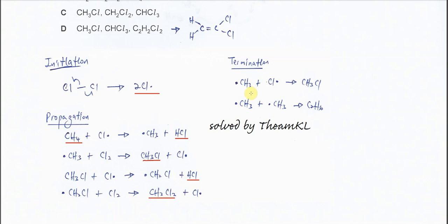For the termination, we know that two radicals combine and form a molecule. The methyl radical can combine with the chlorine radicals to form CH3Cl, or the two methyl radicals can combine and form ethane. These are all the possible products.